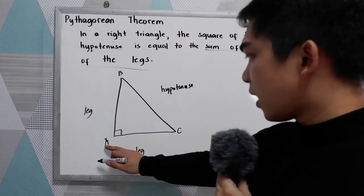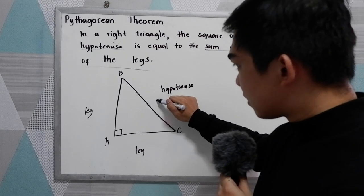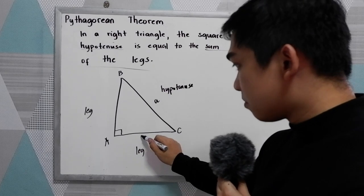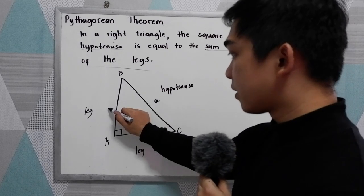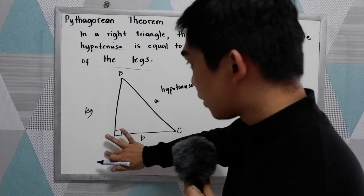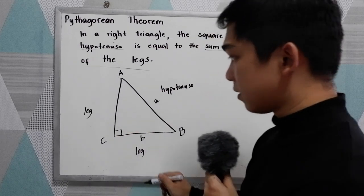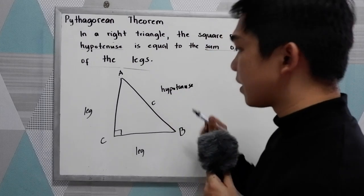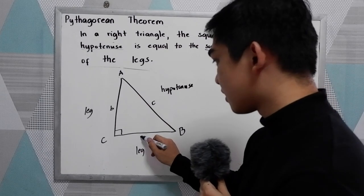Now, opposite of angle A is side BC, or let us name it side a, small letter a. Opposite of angle B is side b, small letter b. And opposite of angle C is small letter c. So small letter c will be the hypotenuse, then b will be one leg and a will be the other.